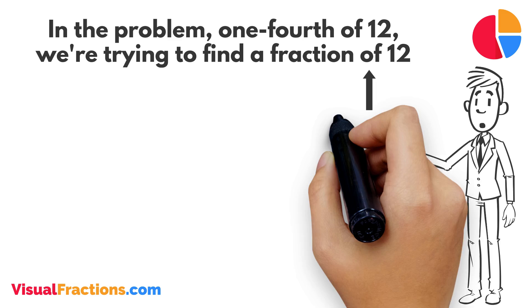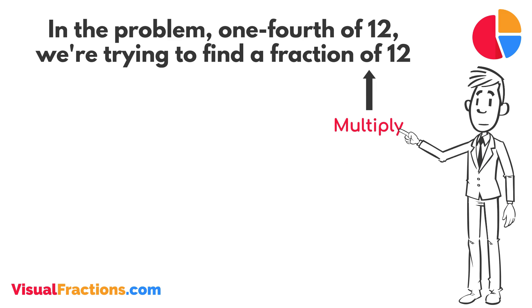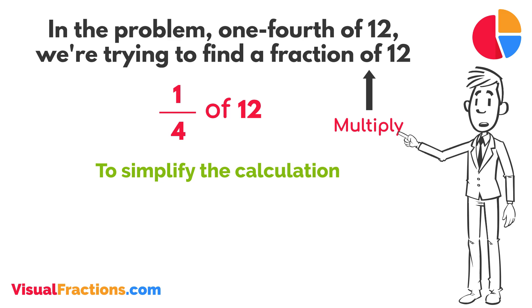The word of, in mathematics typically means to multiply, so we rewrite our problem as multiplication, 1 quarter times 12. To simplify the calculation, we first convert our whole number into fraction form, writing 12 as 12 over 1. This transformation makes it easier to work with our numbers as fractions.